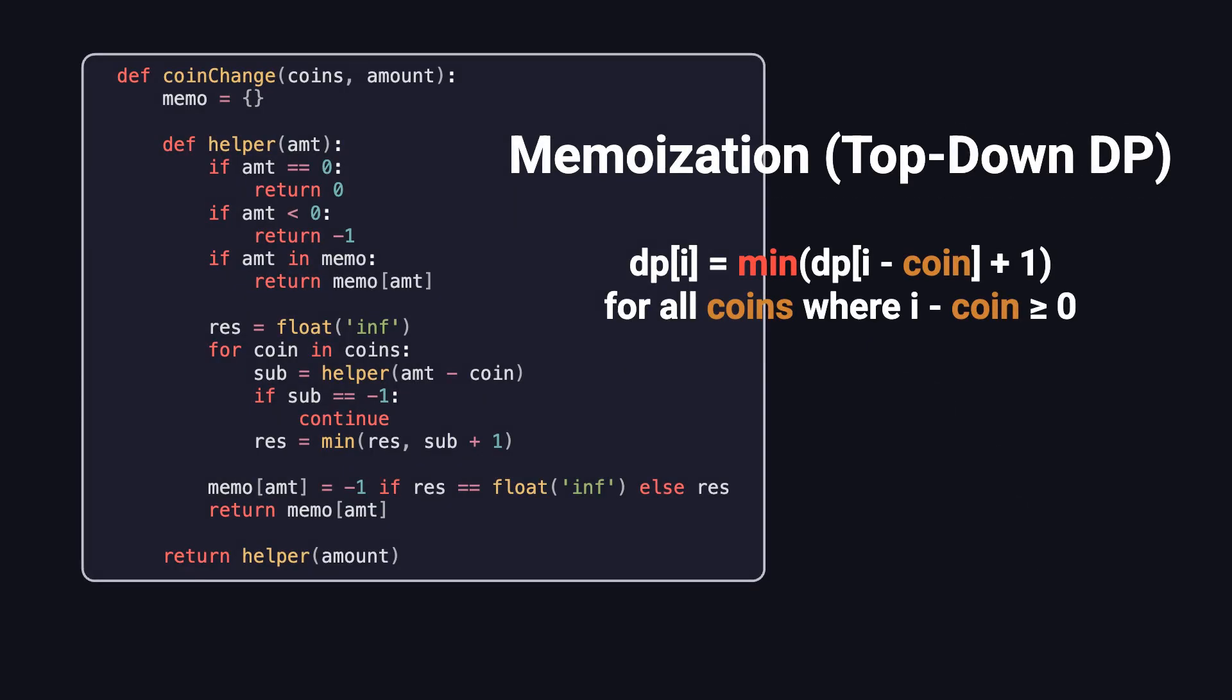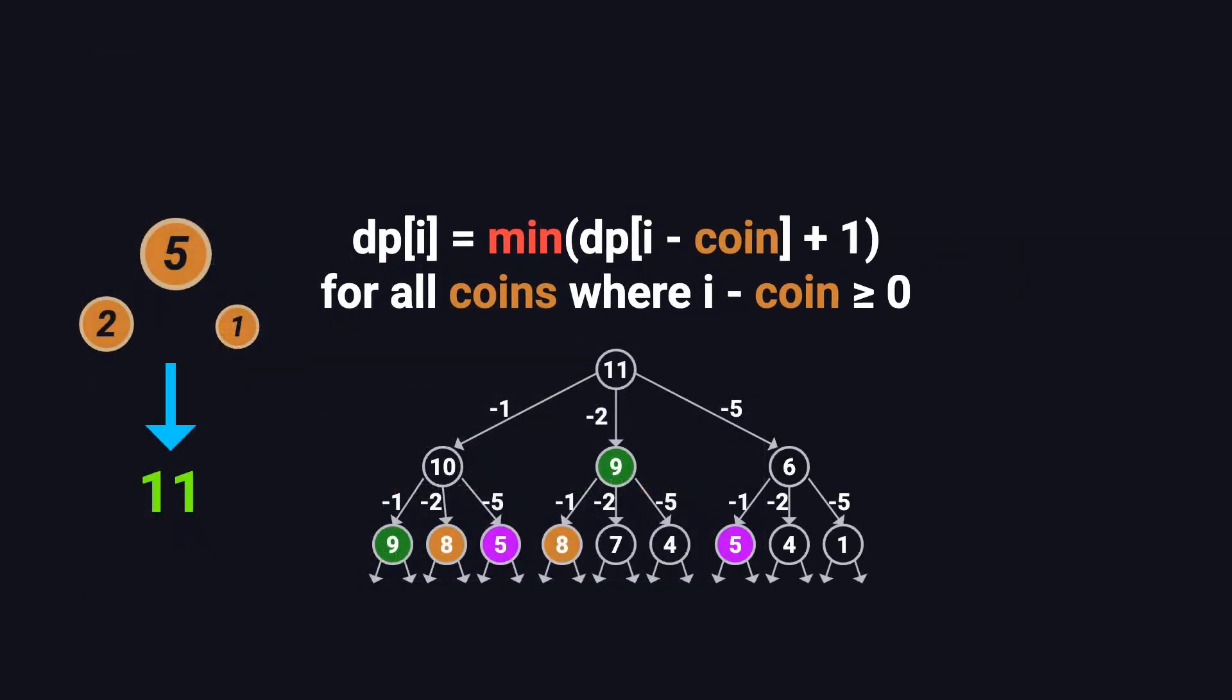Just store results as we go. We create a memo dictionary, and every time we compute the answer for a specific amount, we store it. If we see that amount again, we just return the cached result. With memoization, the top-down solution becomes almost as fast as the bottom-up version, and it's still easy to write and understand.